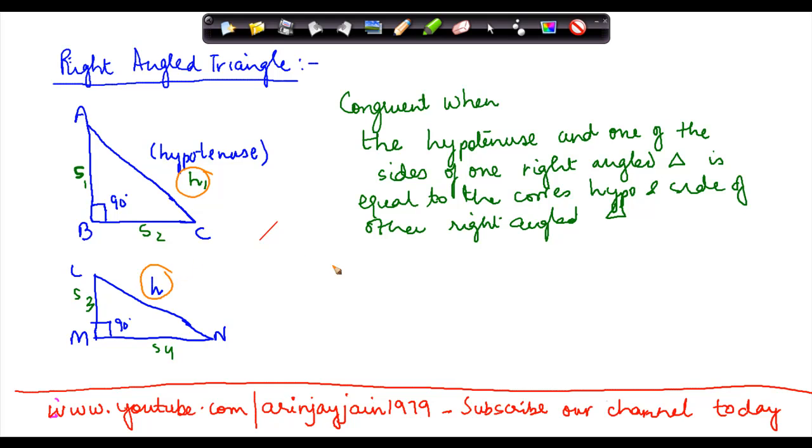So if H is equal to H1, the hypotenuse and one of the sides of one right angled triangle, which means that either S1 or S2 is equal to S3, or S4 is equal to S3.